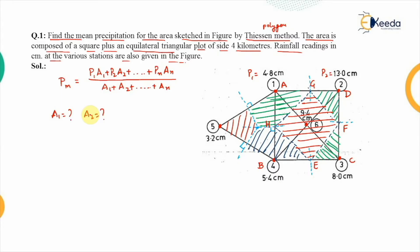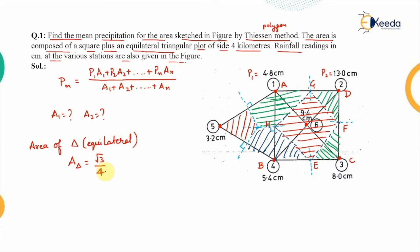To find the areas we use basic geometry. The area of an equilateral triangle is given by (√3/4)·a², where a is the side length. Since the side of the triangle is 4 kilometers, the area of the triangle equals √3/4 × 16 = 6.93 square kilometers.